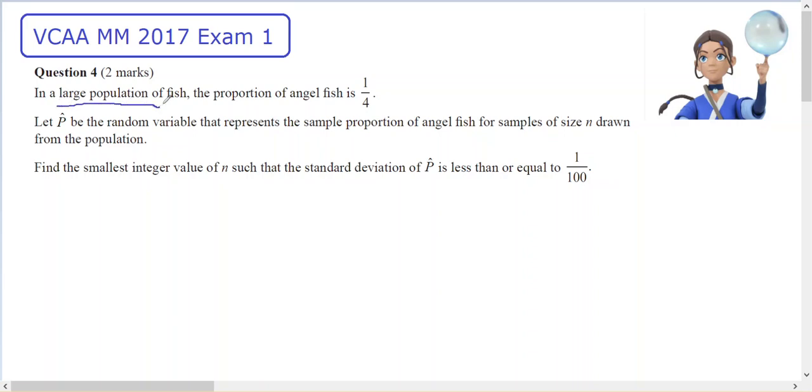In a large population, the proportion of angelfish is one quarter, so p equals one quarter. Since I have a large population, my expected value of p-hat is p, which is one quarter.